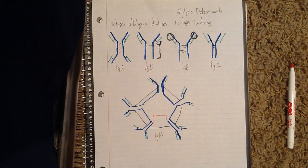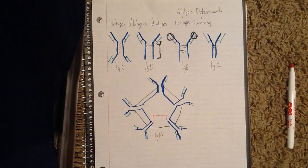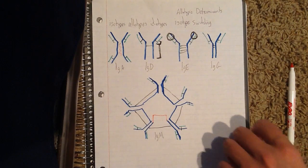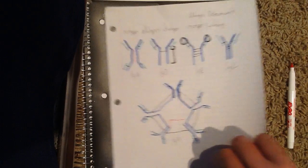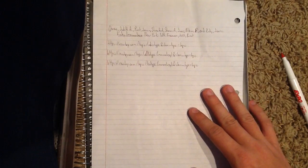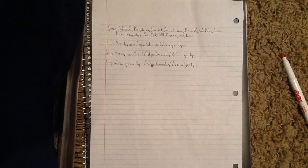Finally, the anti-idiotype antibodies have antigenic determinants that are characteristic of a particular antigen combining site, and this will be found at the variable region of the antibody. Those are allotypes, idiotypes, and isotypes of antibodies.